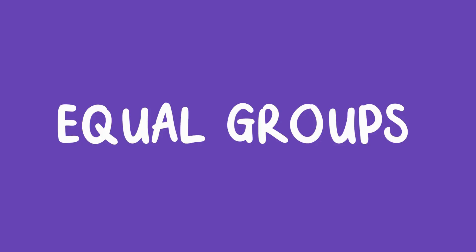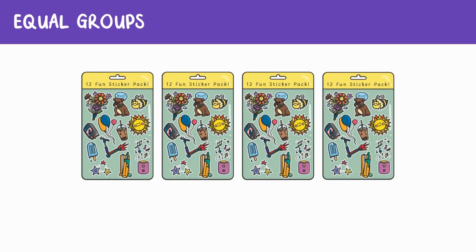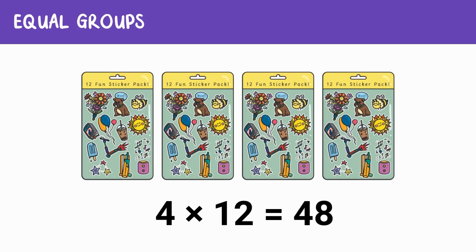One way to understand multiplication is by using equal groups. Imagine you're collecting stickers and you have four sheets of stickers. Each sheet has 12 stickers on it — they are four equal groups of 12. How many stickers do you have in total? To find the total number of stickers, we multiply four groups of 12 stickers. That gives us 48 stickers, so 4 times 12 equals 48.